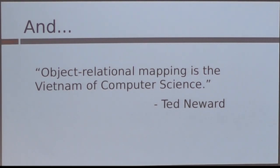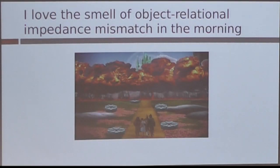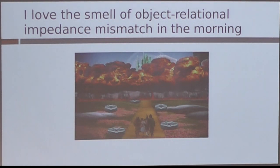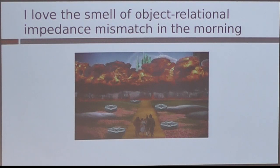Additionally, given the visible landscape, object-relational mapping could be considered a Vietnam of computer science. Ted Neward has a quote about this in a blog post where he says: 'It represents the quagmire which starts well, gets more complicated as time passes, and before long entraps its users in a commitment that has no clear demarcation point, no clear win conditions, and no clear exit strategy.'